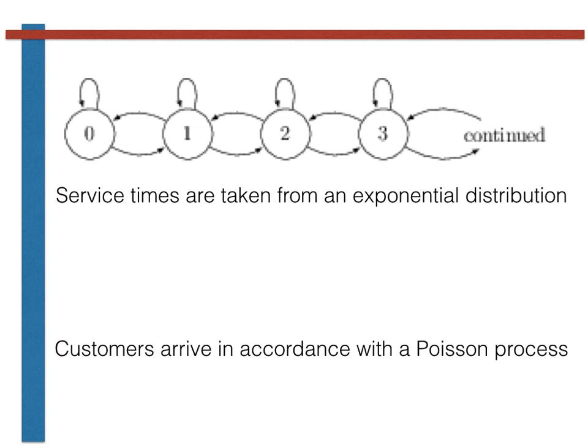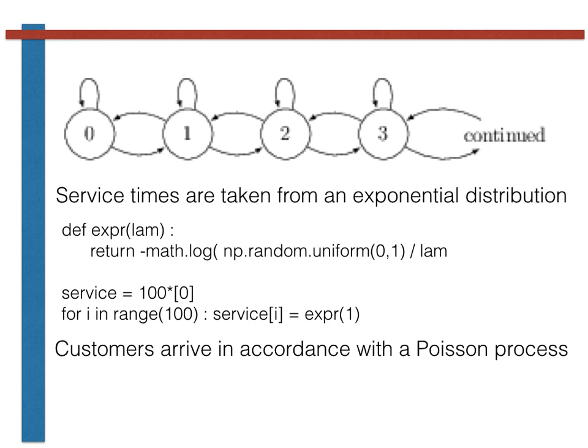Hopefully this information on its own is enough for you to write code to generate service times and arrival times for all the customers that will enter the queuing system. To generate the service times, we just need to write the same code that we have written for every task of this exercise, namely code to generate an exponential random variable. We then take a bunch of samples from this distribution. The lines here show how the code to generate these service times looks in Python.